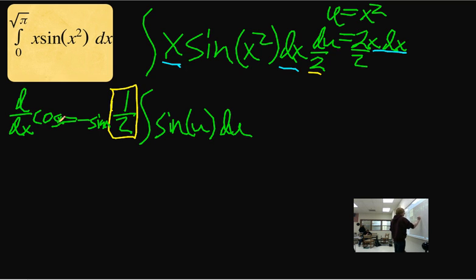So really what it is, the answer, could be negative one half cosine u. And that du is gone because we did what we wanted to. We integrated it.